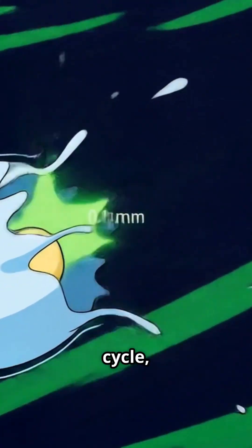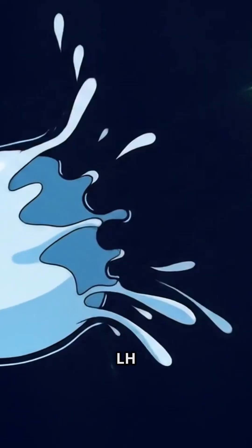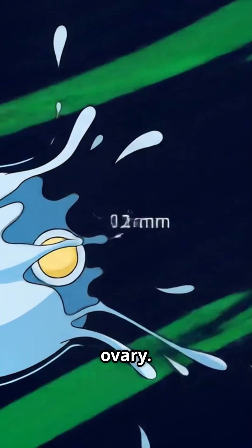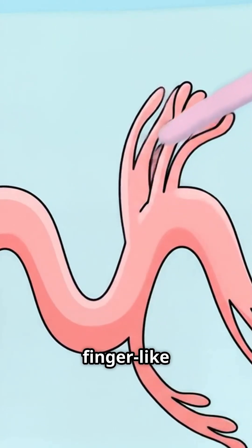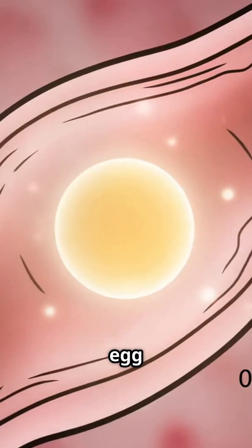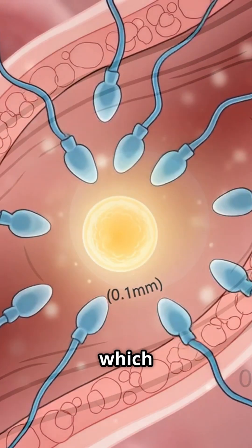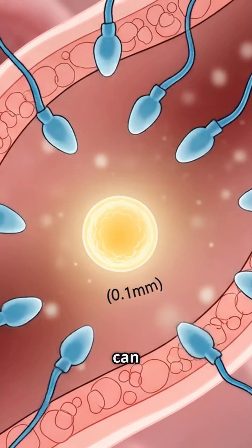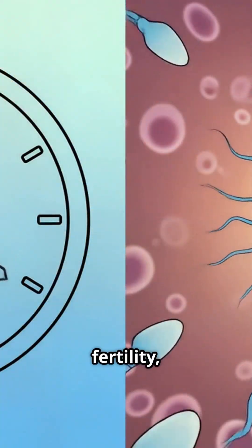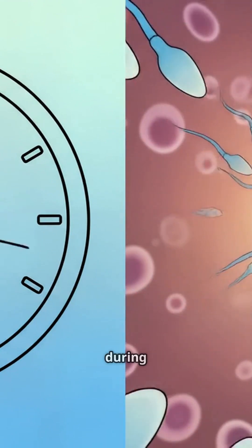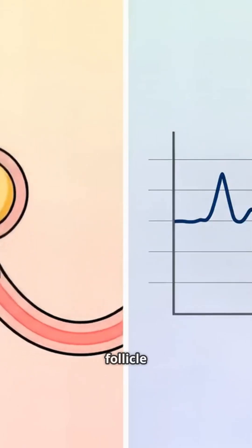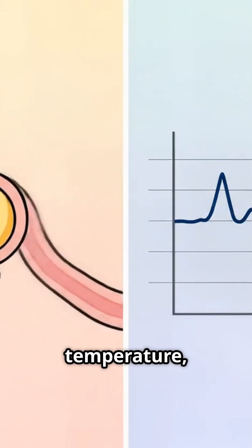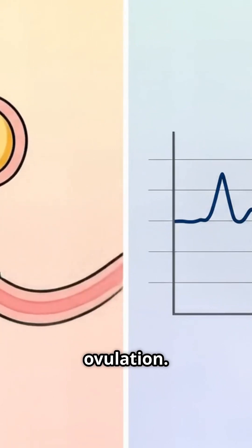Around day 14 in a typical cycle, a sharp surge in LH causes the mature follicle to rupture and release its egg from the ovary. The egg, now ready for fertilization, is swept into the fallopian tube by the finger-like fimbriae at the end of the tube. The egg can survive for about 24 hours, during which fertilization by a sperm cell can occur. This moment represents the peak of fertility, and sexual intercourse during this time has the highest likelihood of resulting in conception. The rupture of the follicle also causes a brief rise in body temperature, a sign that some people use to track ovulation.